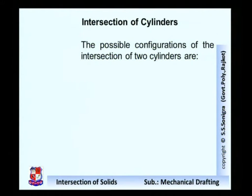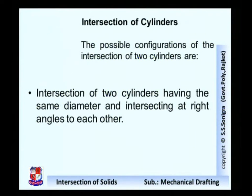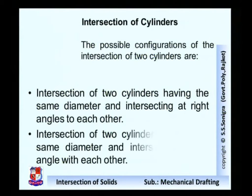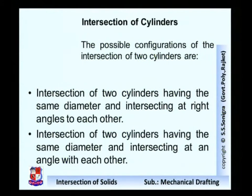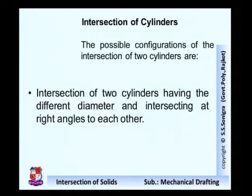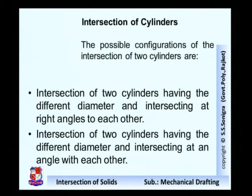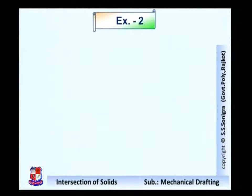Now let me find out the possible configurations of the intersection of two cylinders. These are the four possible configurations: first, intersection of two cylinders having the same diameter intersecting at right angles; second, same diameter intersecting at any other angle; third, different diameters intersecting at right angles; and fourth, different diameters intersecting at a certain angle. In the given problem, the first case applies — the diameters of both cylinders are equal. Let me draw this problem.